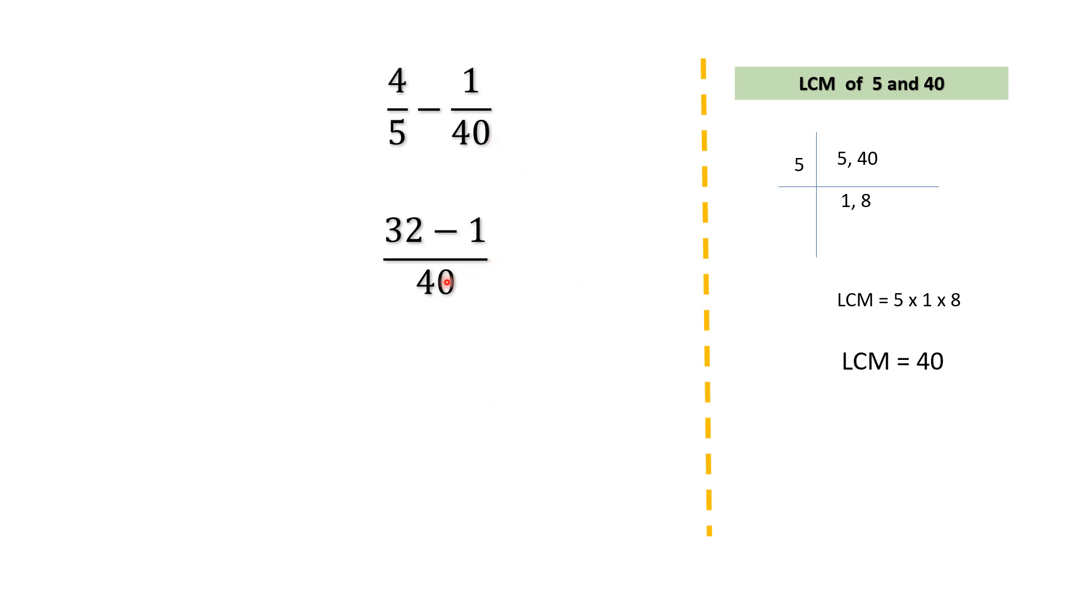40 multiplied by how much is 40? We know 40 ones are 40. So 40 ones are 40 and that one will be multiplied to the numerator 1 and thus we get 1. Now at the end we will just subtract 32 minus 1 that gives us 31 and the denominator is 40. So the answer is 31 by 40.